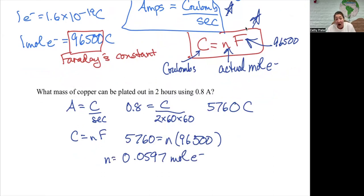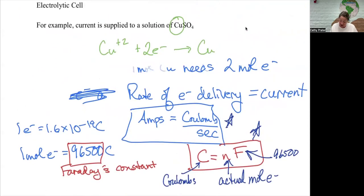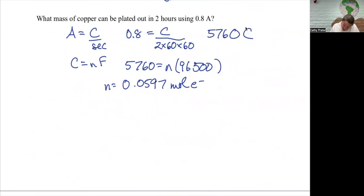I need the moles of copper. What I want to use to get the moles of copper is this reaction that I determined earlier is what is going on in this solution. So from that reaction of Cu plus two plus two electrons gives me Cu, I can do a mole ratio to go from here to here. So 0.0597 moles of electrons times one over two gives me 0.0298 moles of copper.